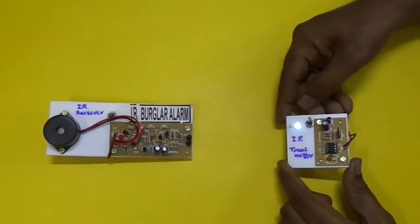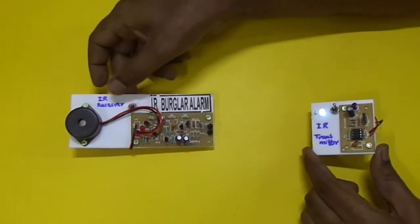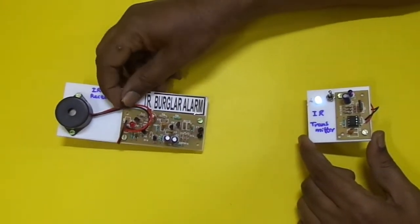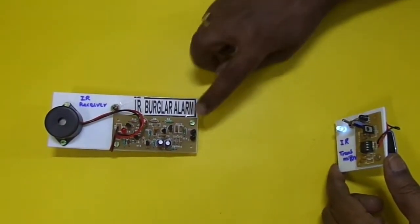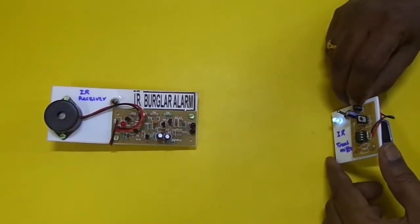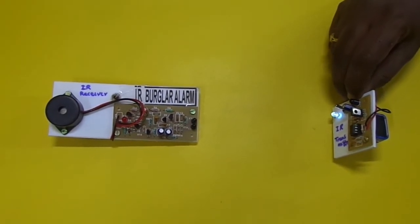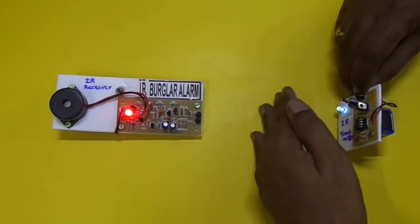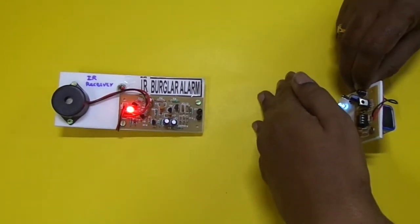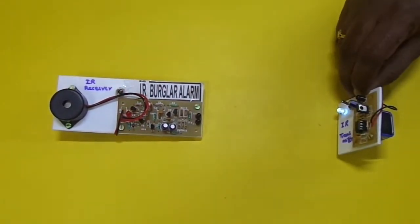First we switch on this IR transmitter and then switch on this IR receiver. When the IR rays fall on this IR sensor, there is no sound. When any person enters in between the IR transmitter and receiver like this, it immediately gives a high buzzer sound which is an indication that somebody is entering the area.